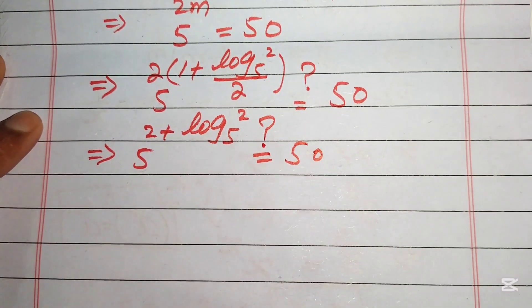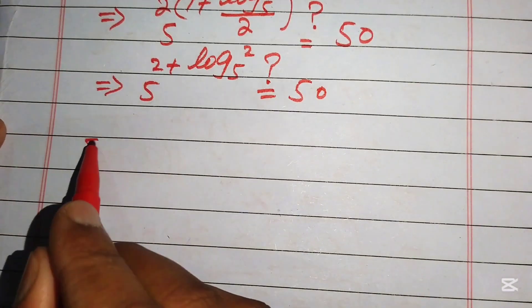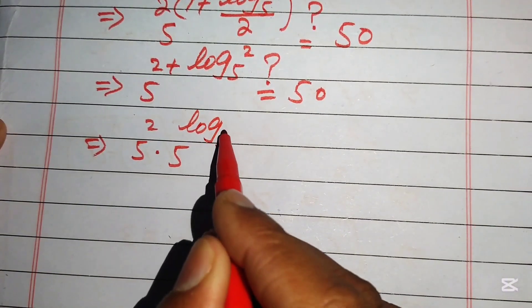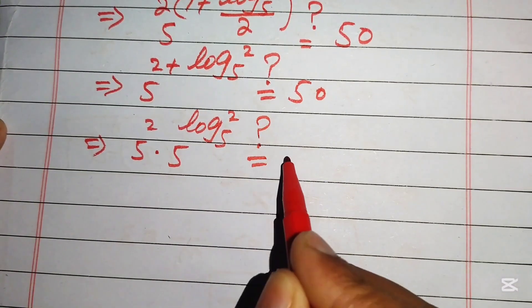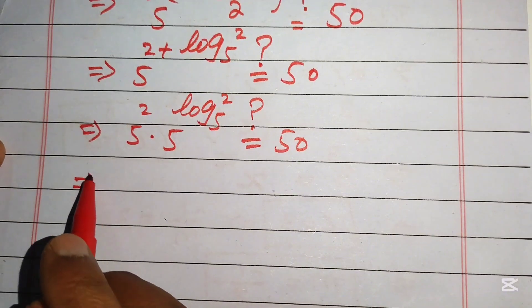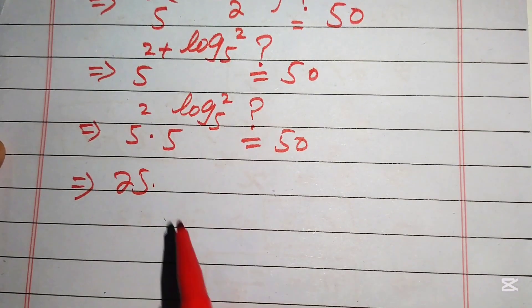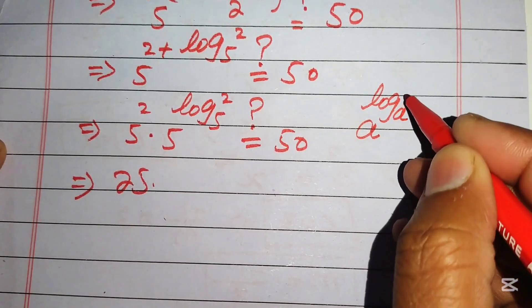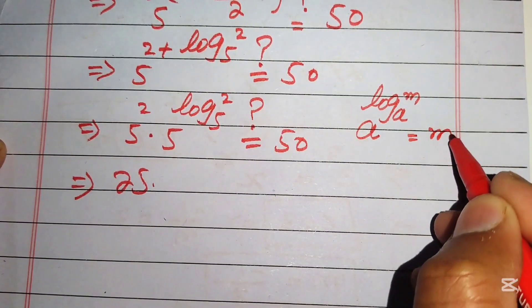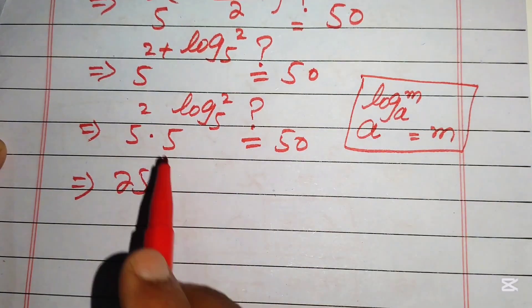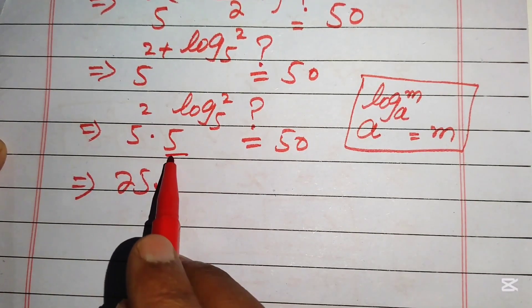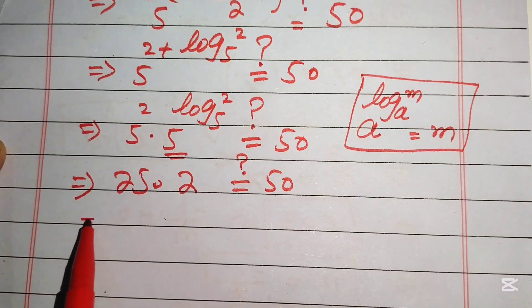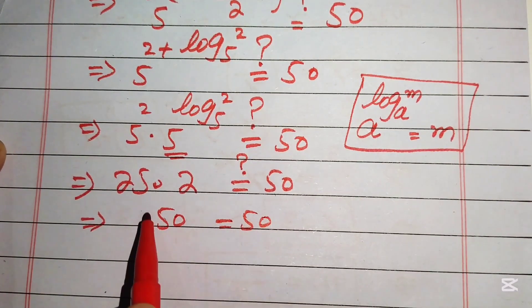Applying the exponential law, we break this as 5² times 5^(log base 5 of 2). We know 5² equals 25, and using the property a^(log_a(m)) equals m, the term 5^(log base 5 of 2) equals 2. So we get 25 times 2, and we check if this equals 50.